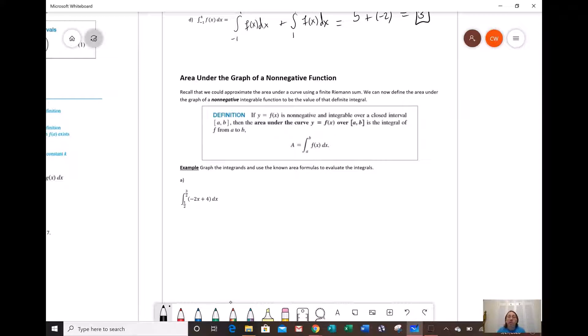This is simply saying find the area under the graph if it's a non-negative function. This function is non-negative, meaning it's positive or zero, over this interval. So because this is a positive function, this is going to be the area under the curve. We could approximate the area under a curve using a finite Riemann sum. We can now define the area under the graph of a positive or zero, non-negative, integrable function to be the value of the definite integral.